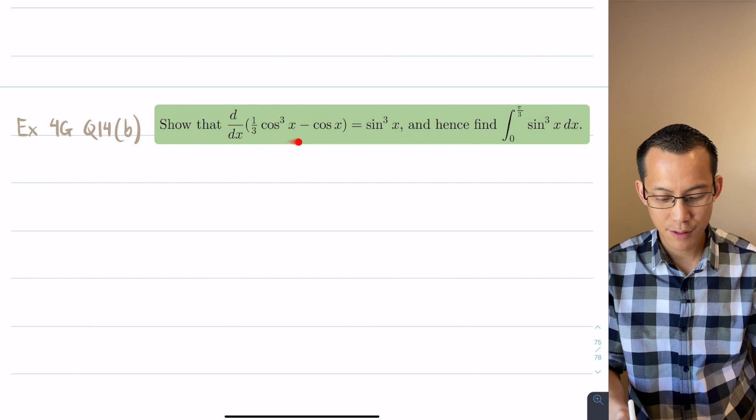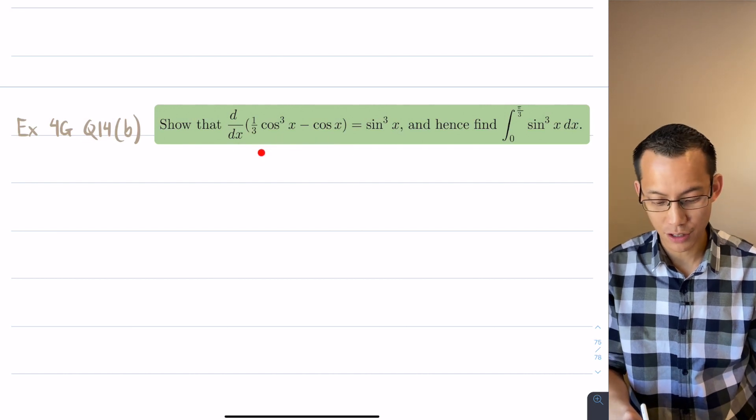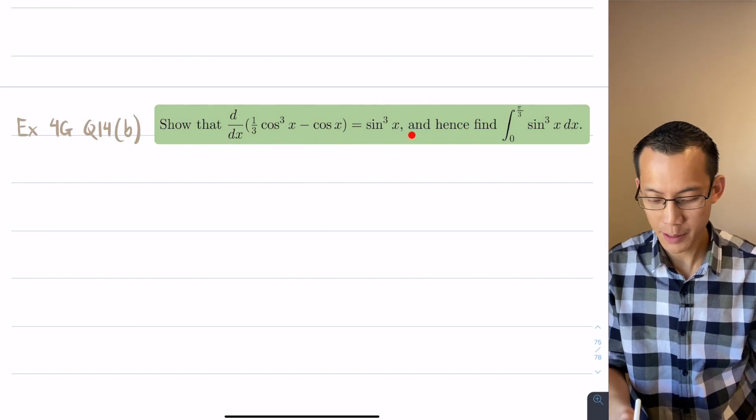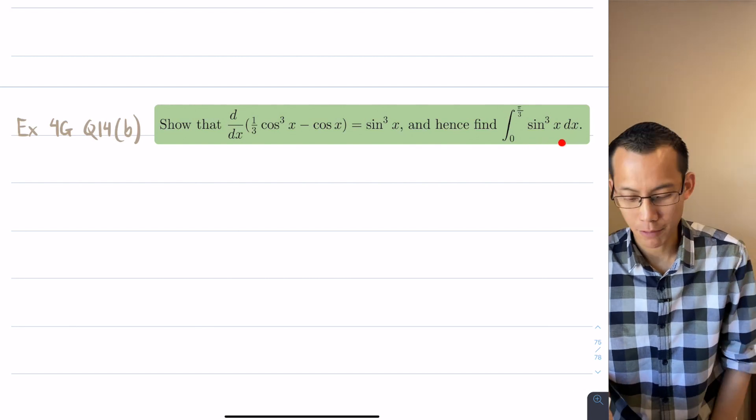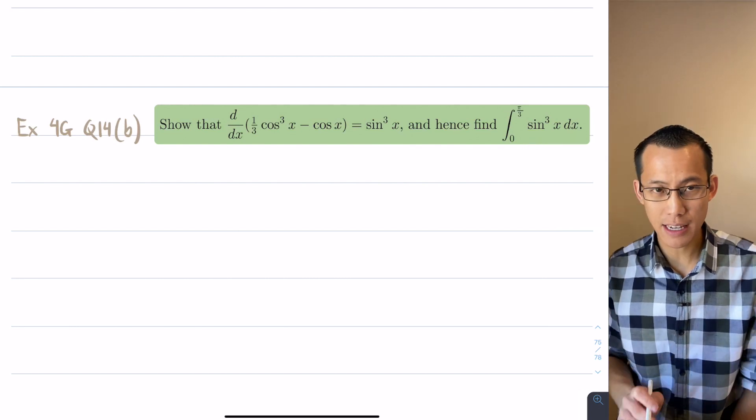Let's step through this one at a time. It says, show that this derivative, or the derivative of this I should say, will give you sine cubed x and hence find this thing, this integral.